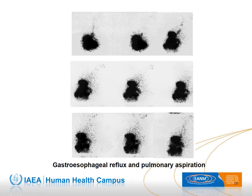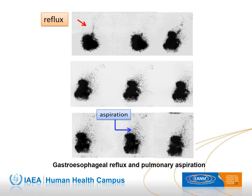This slide shows episodes of gastroesophageal reflux on the first frame and a second episode on the third frame. From that point onward, diffuse activity can be seen over the lung fields consistent with pulmonary aspiration.